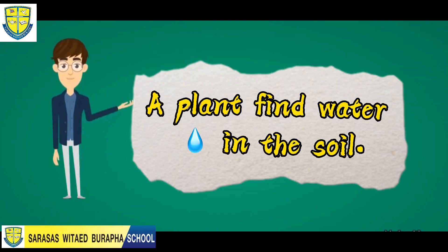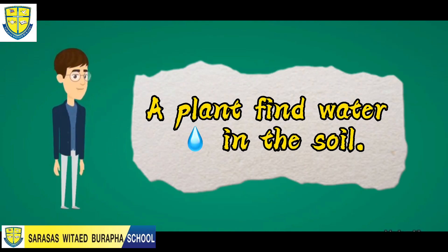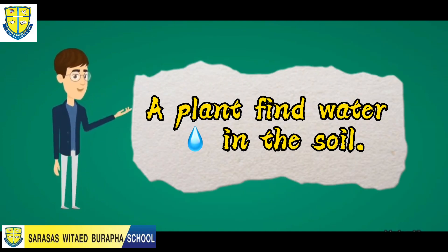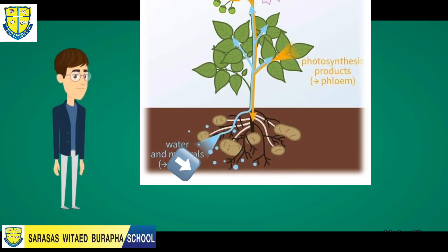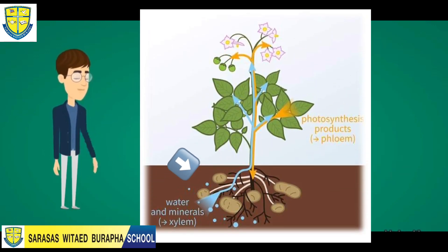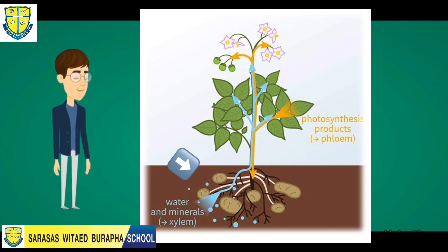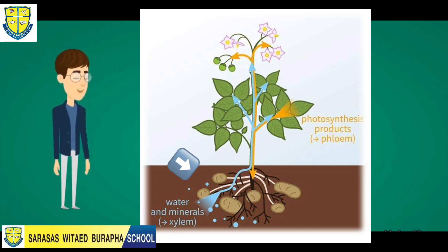Plants find water in the soil. A plant's roots take the water from the soil and move it up the stem to the leaves.